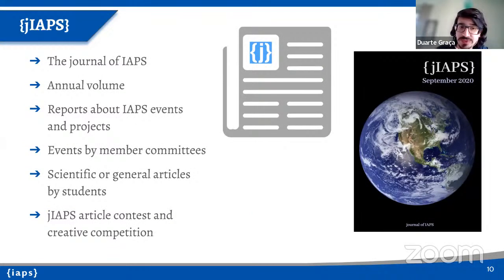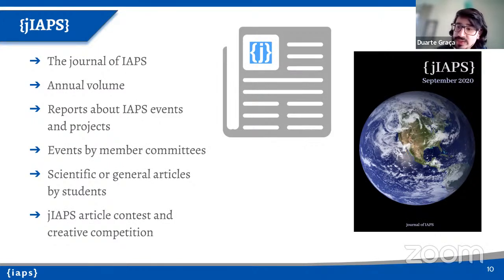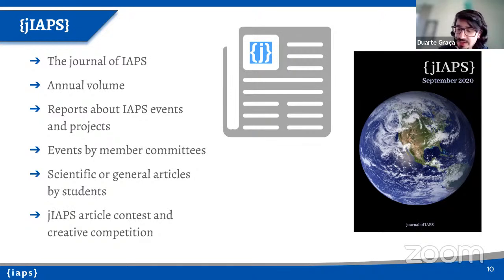Regarding PLANCKS, the physics student competition, it usually gathers around dozens of teams from several countries. Last year it had to be organized online by students in Porto, Portugal. This year it will be in a mixed format — in person in Munich, Germany — and next year it will be in Italy. The Journal of IAPS is an annual volume that publishes events, opinion articles, and artwork combining students' creative and scientific sides.